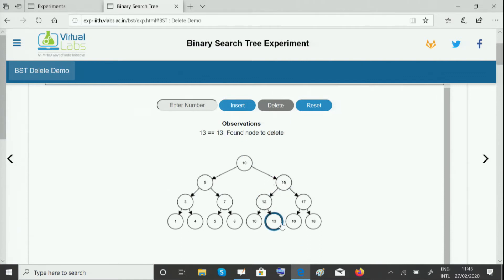We're looking for 13. Once we've found it, we just remove it since it's a leaf node.